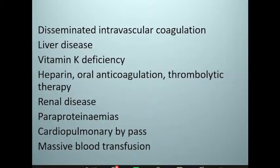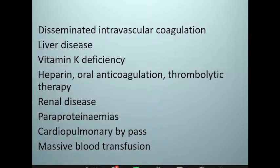Some malignancies as well — disseminated malignancies, and some leukemias like acute promyelocytic leukemia. Then we have liver disease. As you are aware, most of the coagulation factors are synthesized in the liver. When we have chronic liver disease with imminent liver failure, there is reduced synthesis of coagulation factors, and that presents with coagulopathy. Vitamin K deficiency, seen in neonates and sometimes in adults, can also present with an acquired bleeding disorder.